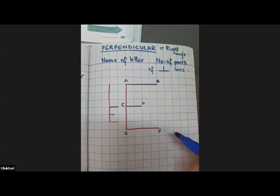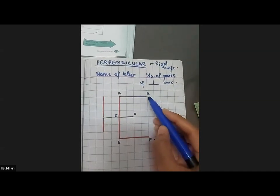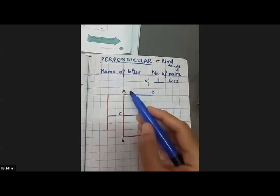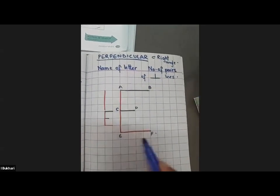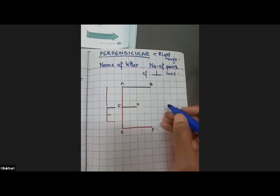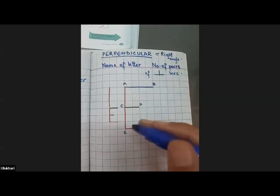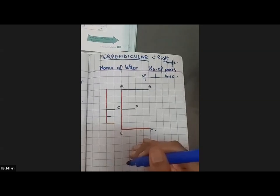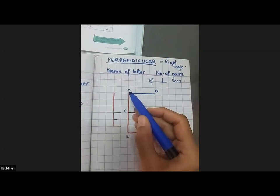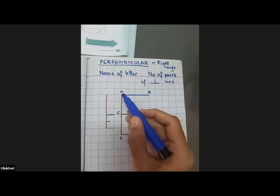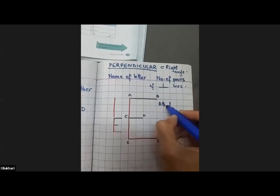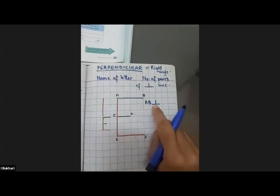I drew a big E. Let's say I named each of the corners with a letter: A, B, C, D, E, F — so that it's easier for me to name the lines. Now let's name the pairs of lines which are perpendicular, and you guys will help me out. First line is AB. So AB is perpendicular to — who wants to answer? A, E? Yes, good job. Can I even call it AC? Yes, AC is also fine — AC is a part of AE. So AB is perpendicular to AE, which is the same as saying AC.